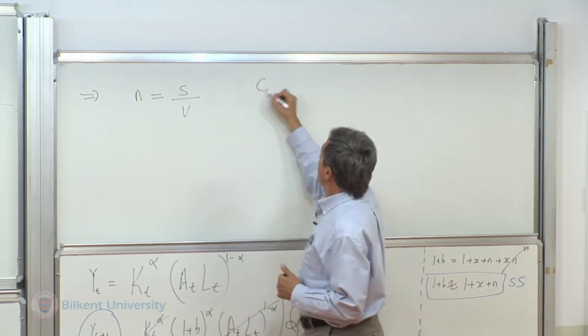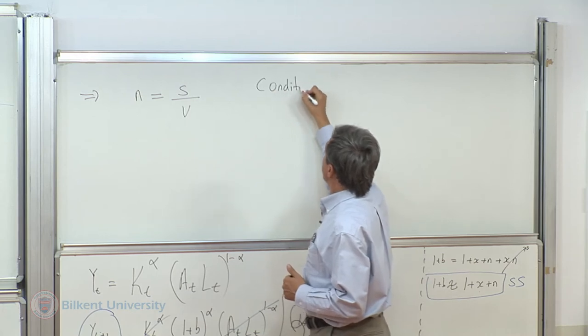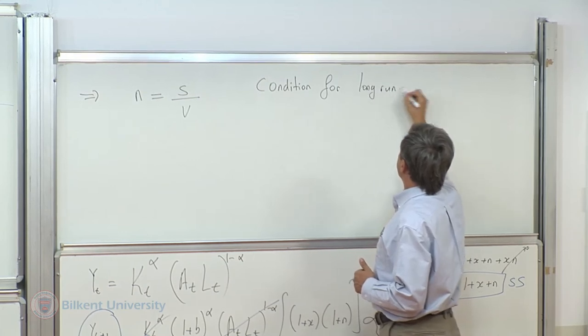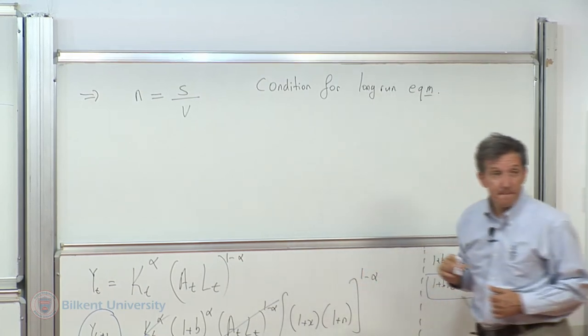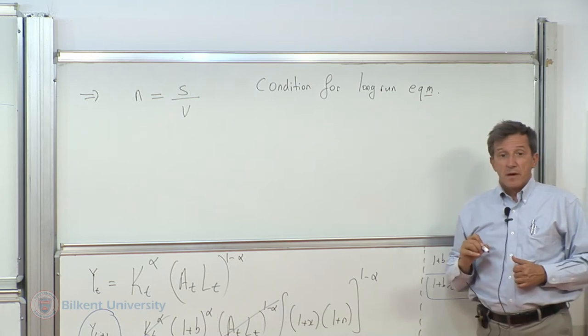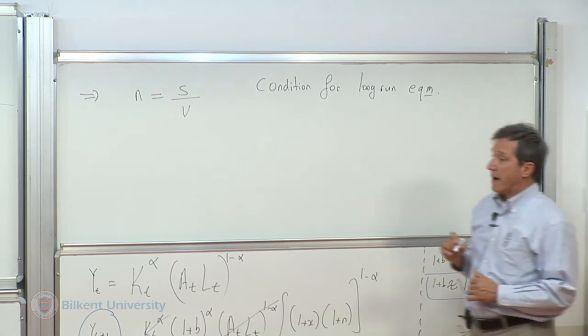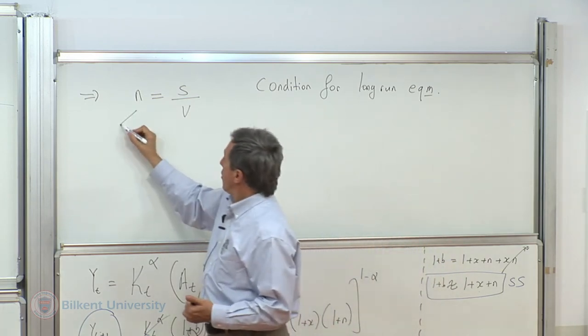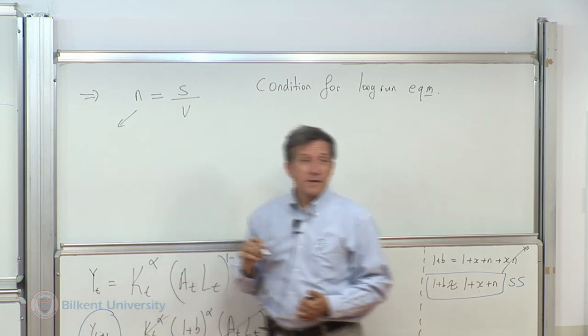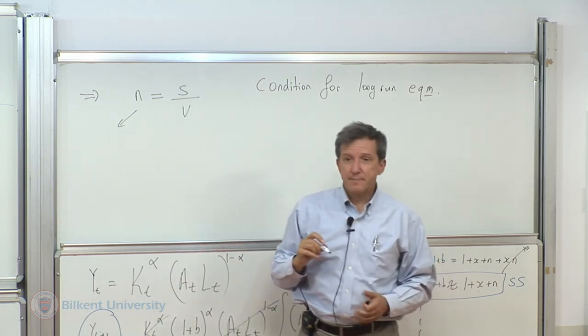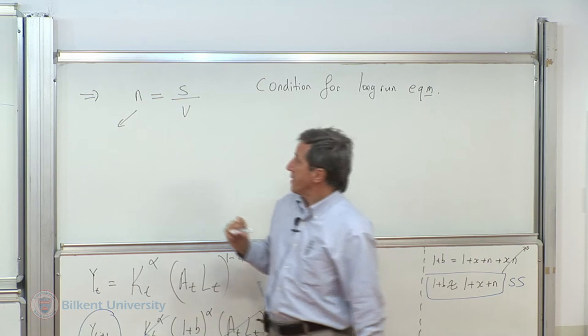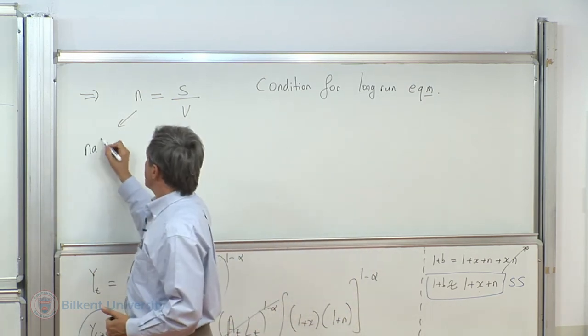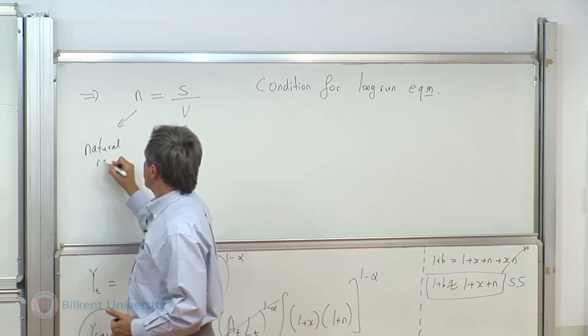This is the condition for long run equilibrium. And since this is something big, I want to give fancier names for it. On this side, population growth rate is exogenous, I'm not contesting that. But it will be referred to as the natural rate of growth.